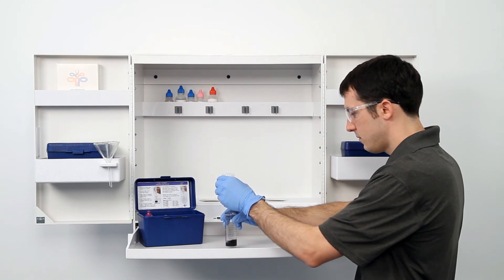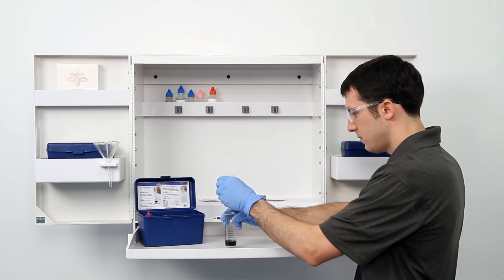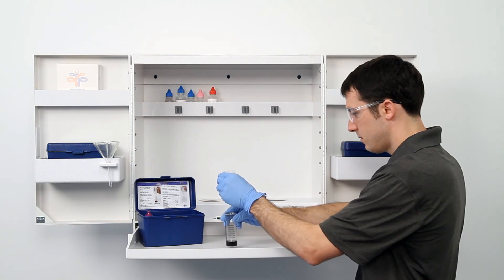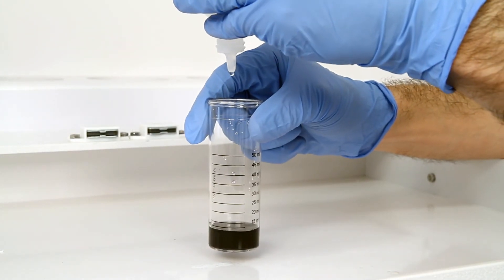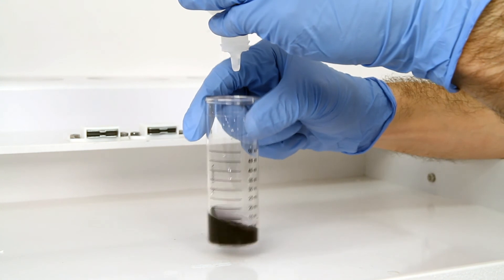The bottle of titrant contains a dropper tip, therefore it's important to hold the bottle vertically to make sure you get a consistent drop size. After the addition of each drop of titrant, swirl the vial to make sure the sample is properly mixed. Count the number of drops during this step.